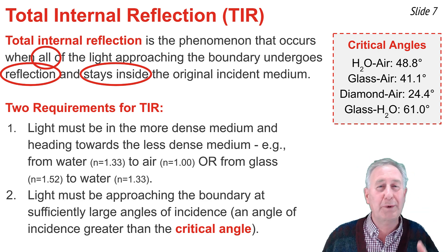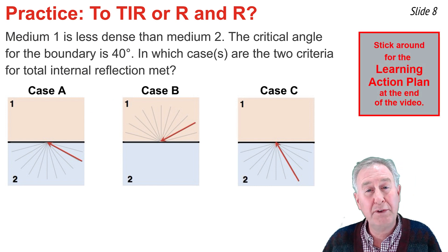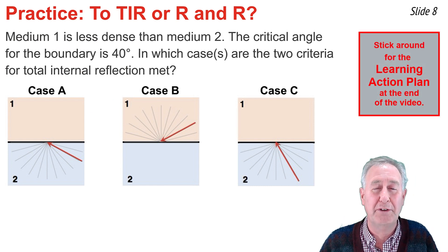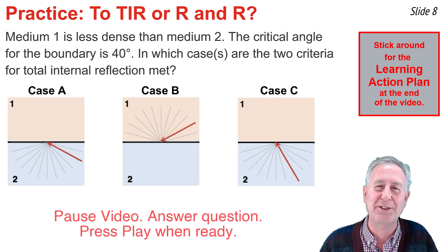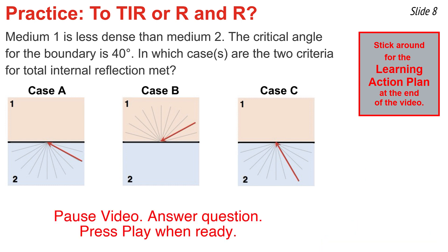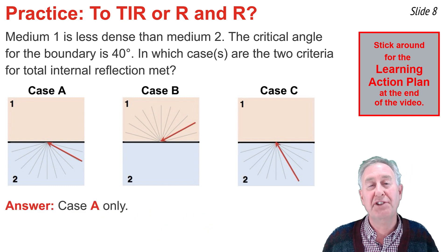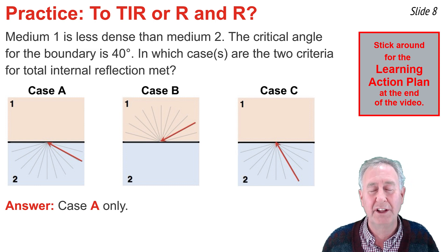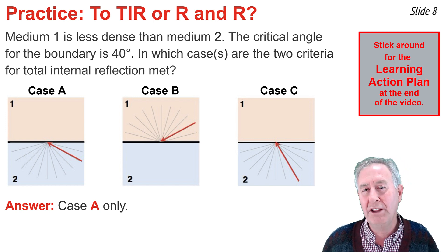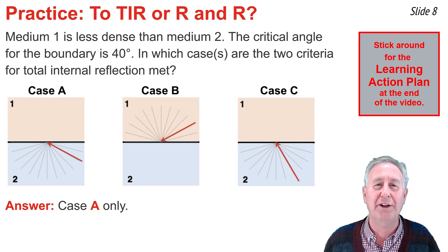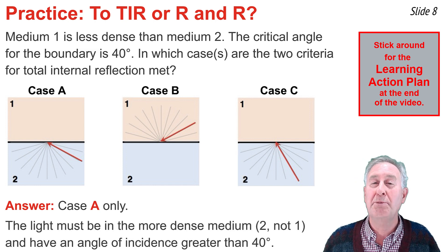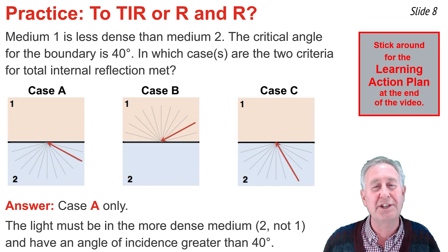Here's a practice problem to see if you understand the two criteria for total internal reflection. Pause the video, read the question, answer it, and when you're ready press play. The answer is A. Case B is ruled out because the light is in the less dense material heading towards the more dense material. In case C, the light is in the more dense material heading towards less dense, but the angle of incidence appears to be 30 degrees, which is less than the critical angle. In case A, the light is in the more dense material heading towards less dense, with an angle of incidence of about 60 degrees — greater than the critical angle.